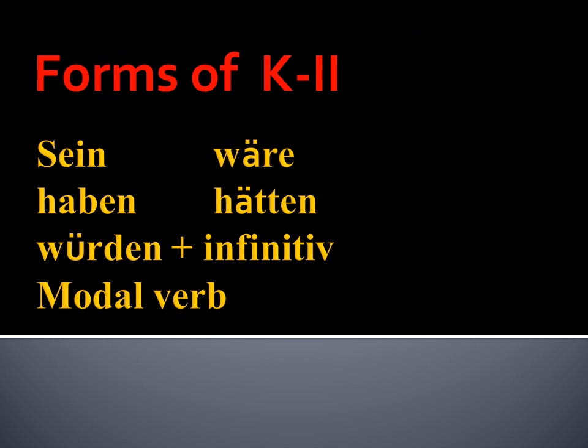There are different forms. If the verb is 'sein', you will use 'wäre'. If the verb is 'haben', you will use 'hätte'. And 'würden' plus infinitive covers all other verbs — if you are not using 'sein' or 'haben', then you use 'würden' plus infinitive at the last place. Another case is modal verbs — with modal verbs you can also express Konjunktiv 2.